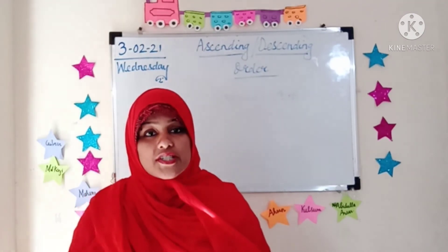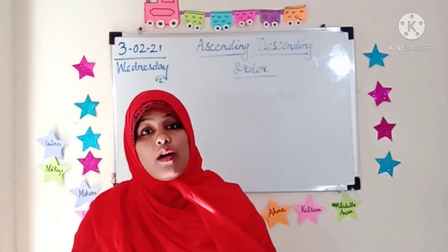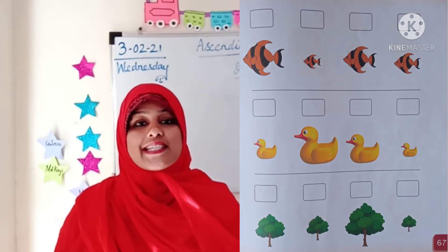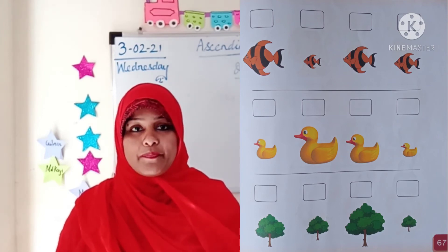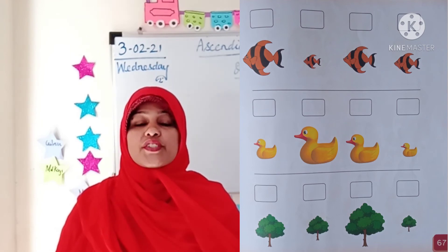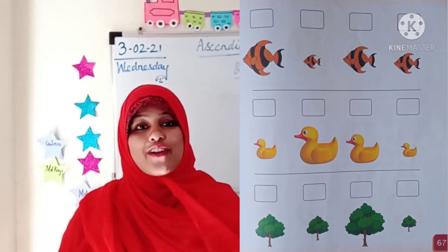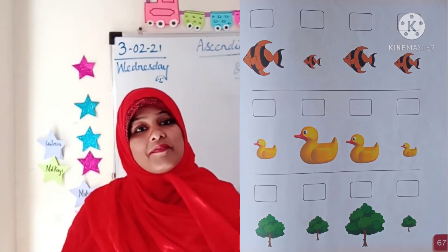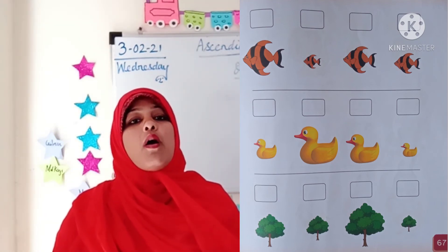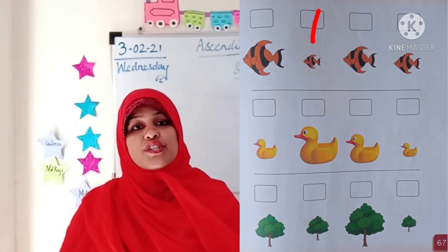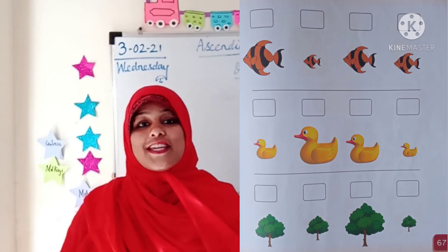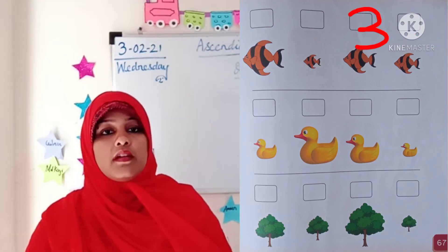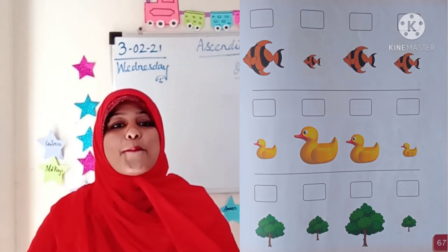I hope you have understood the concept of ascending and descending order. Now it is time to do something in our math textbook. Please open page number 67 of your math textbook. Here we need to number objects from smallest to biggest. Here you can see fishes of different sizes. Which is the smallest fish? Yes, this second one — we write the number 1 over there. A little more bigger — here we write number 2. Then a little more bigger — here we write number 3. And which is the biggest fish? Here we write number 4.